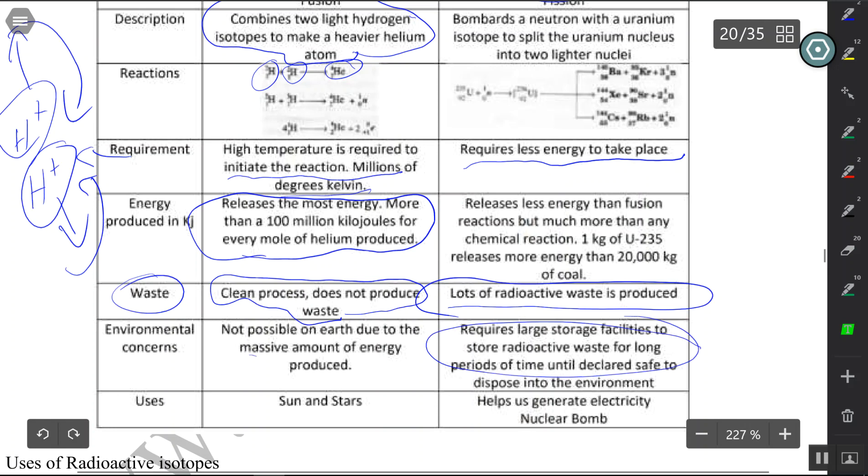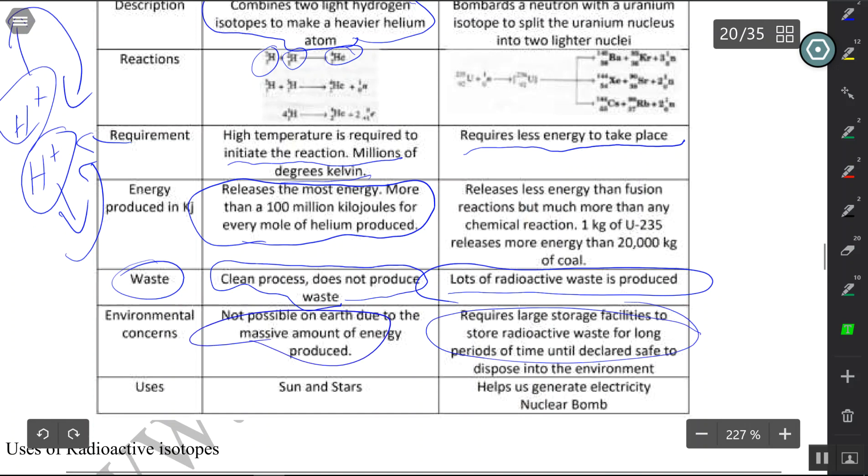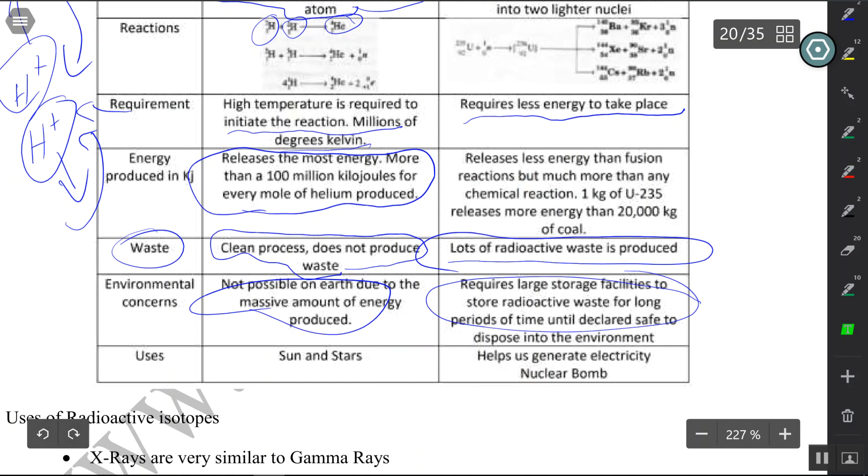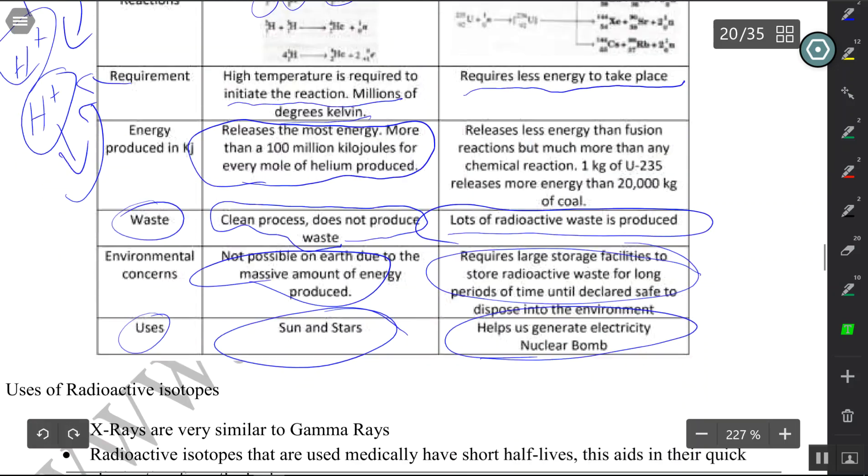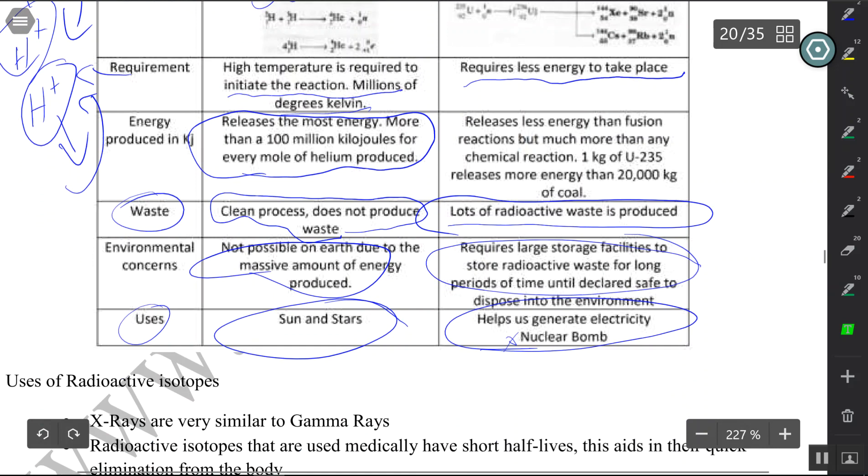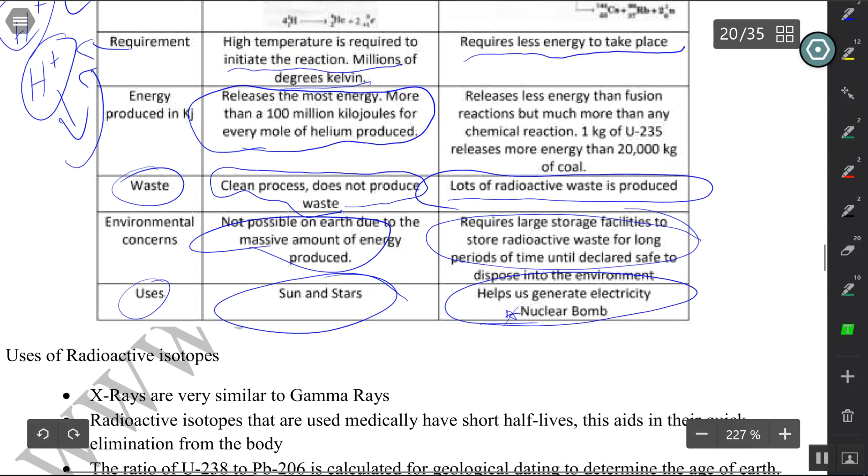You can't really do fusion on earth - you'll destroy earth. When it comes to uses, we already talked about how fusion is present in the sun and the stars, and fission helps us create electricity and is also used to create nuclear bombs.